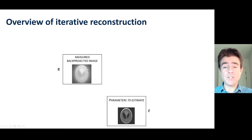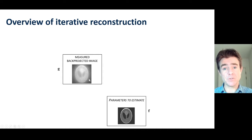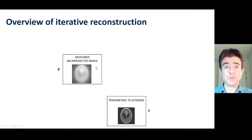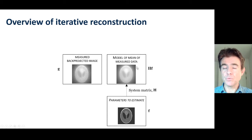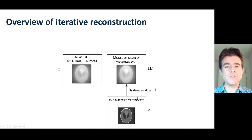Then we have some measured data. Up to now we've been focusing on the case of back-projected data, but in this video I want to connect us back to sinograms as well. Whatever the measured data, that is obviously involved in iterative reconstruction, whether it's in sinogram form or back-projected image form. Then we need some model of how to get from the parameters to a model of the mean of the measured data. When we do this forward model step, it is always for the mean of the data. We model the noise separately through the objective function.